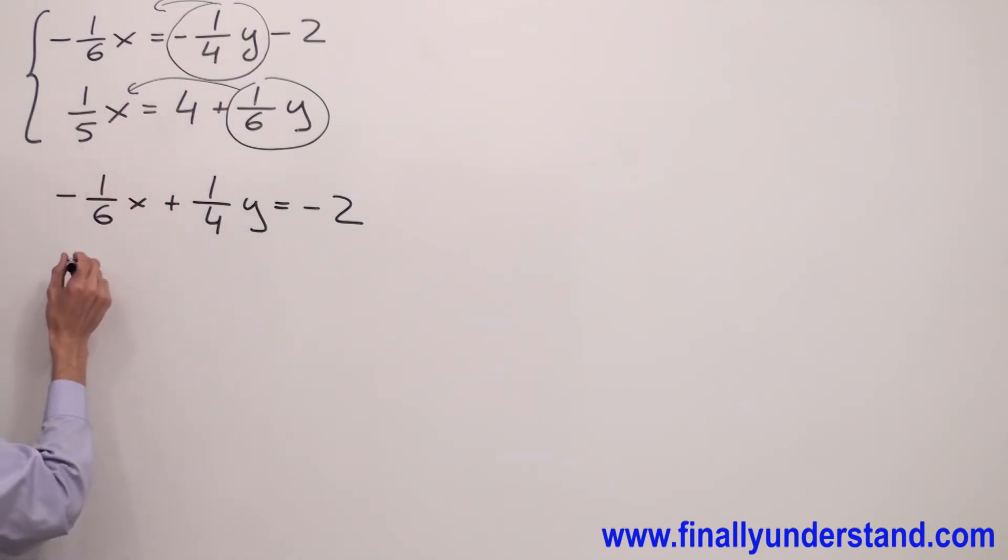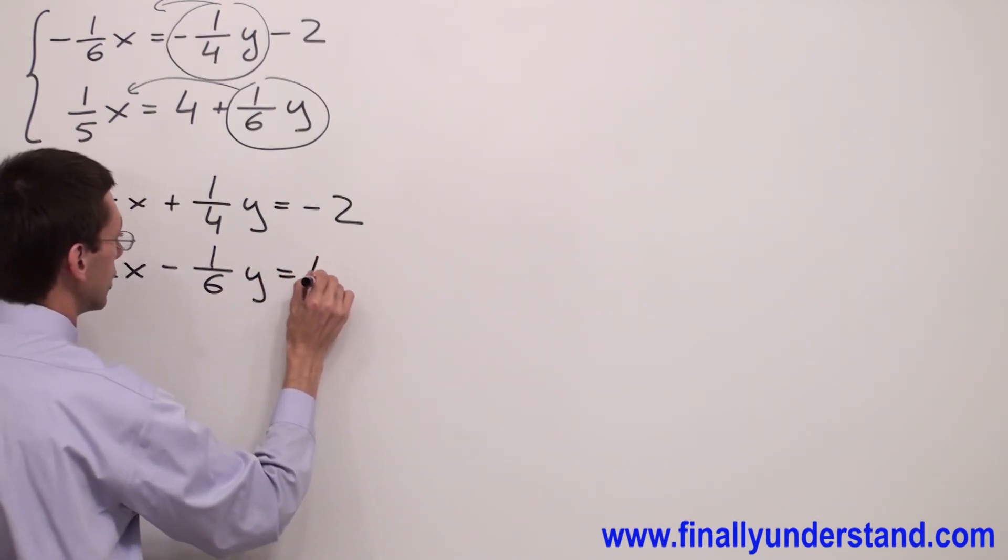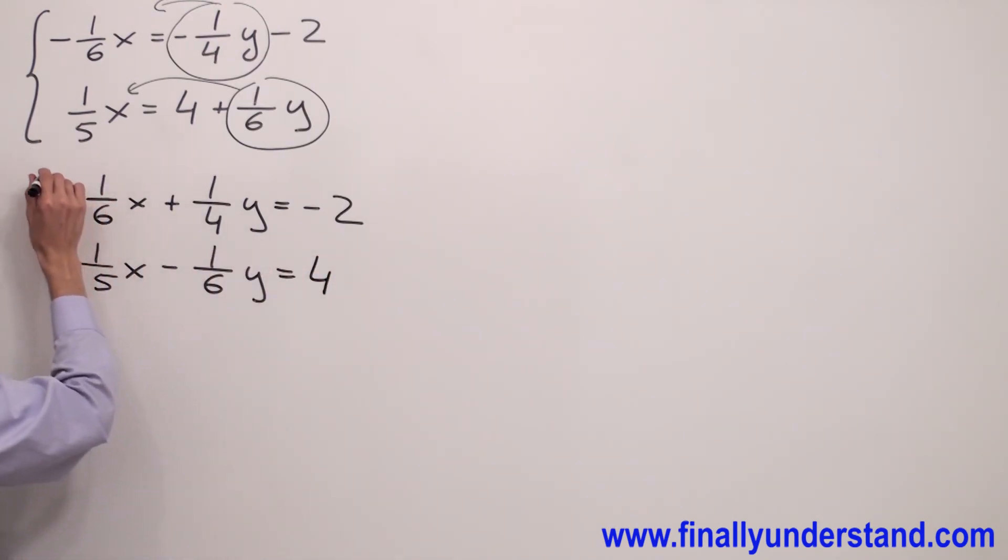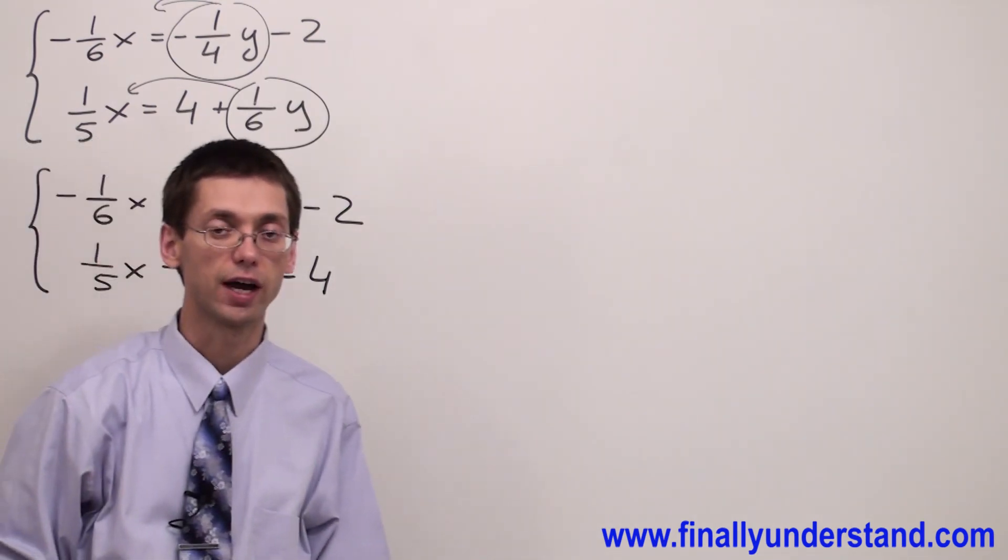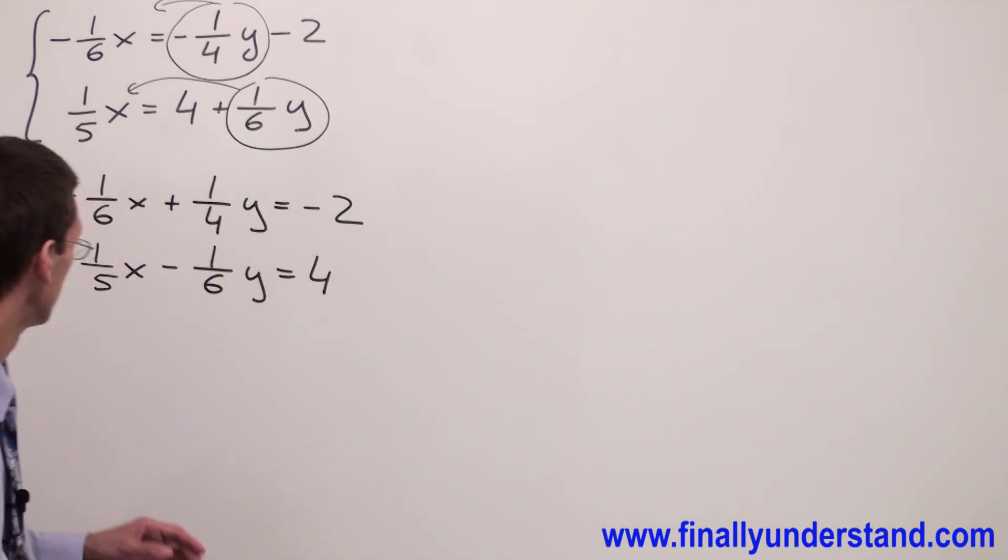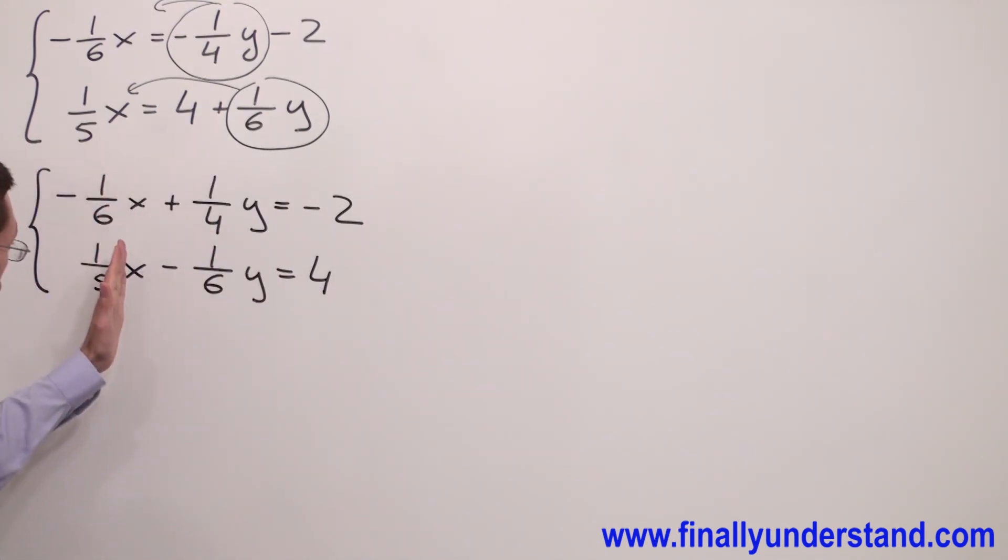So I'm going to have 1 over 5 x minus 1 over 6 y equals 4. As you can see, right now both my equations are organized. Remember we're supposed to have x variable on the left side.